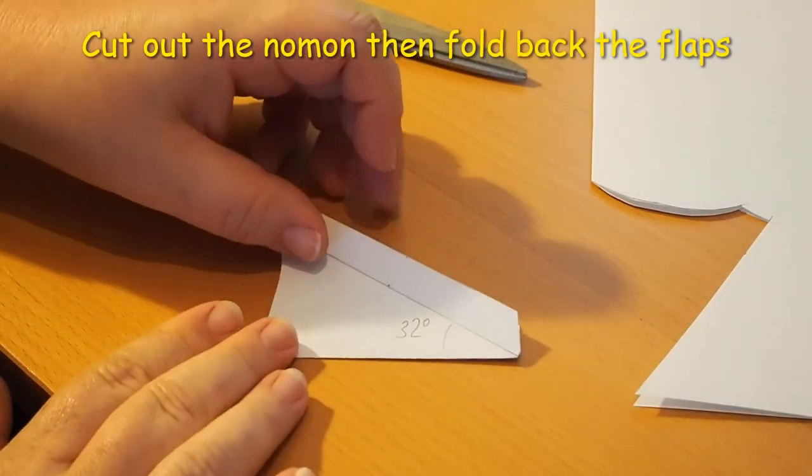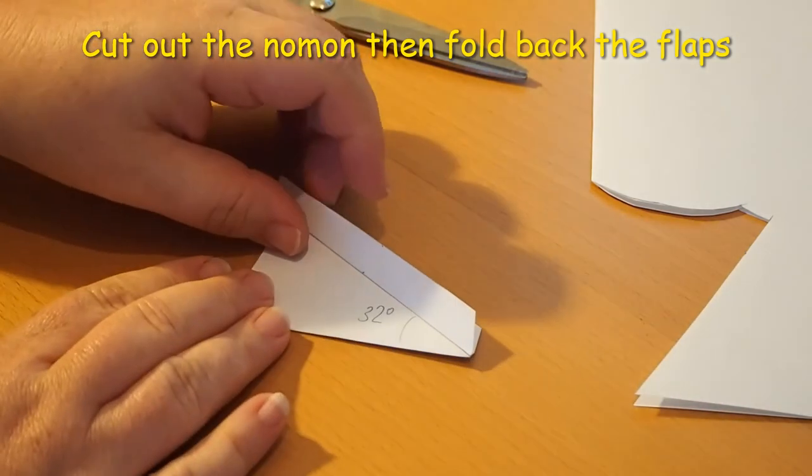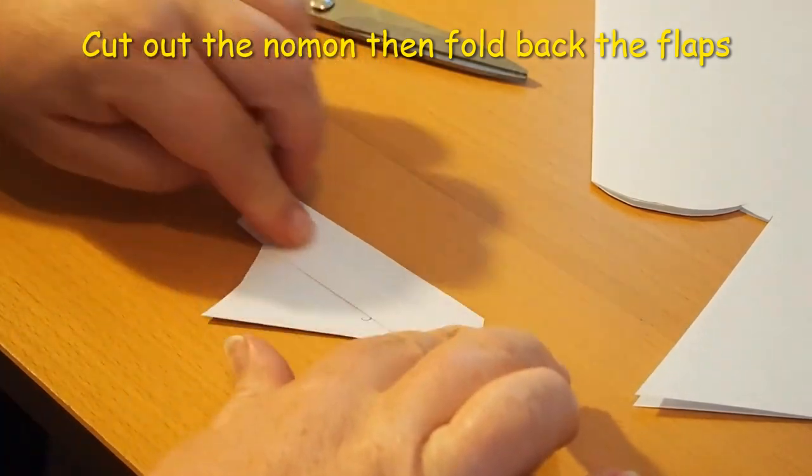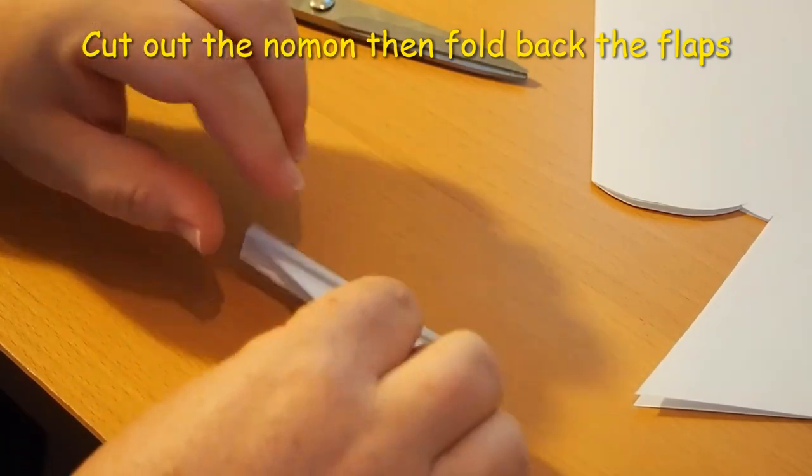Carefully cut out the gnomon. Ask an adult for help if you need it. Fold one flap back, then turn it over and fold the other flap back. These flaps will attach to the base we made earlier.